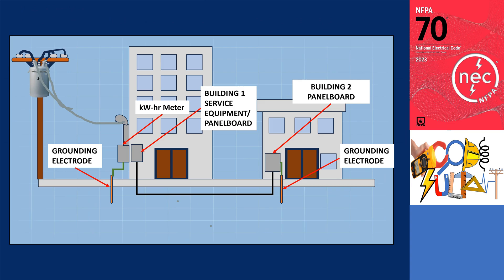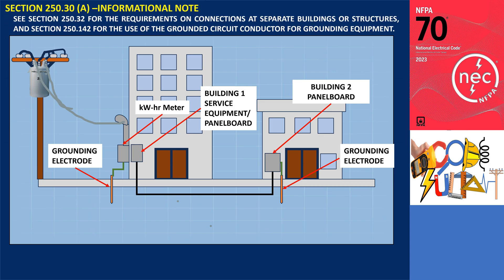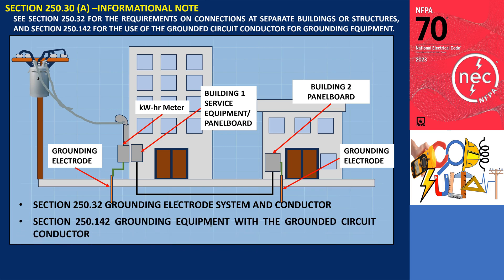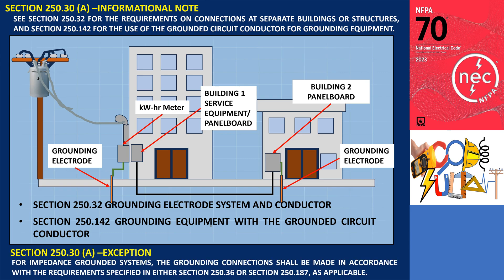It's worth noting that rules regarding connections at separate buildings or structures can be found in section 250.32, while the utilization of the grounded circuit conductor for grounding equipment is covered in section 250.142. An exception applies to impedance grounded neutral systems, where grounding connections should be made as specified in 250.36 or 250.187, depending on the circumstances at hand.